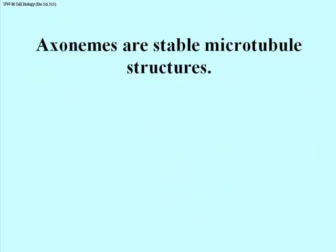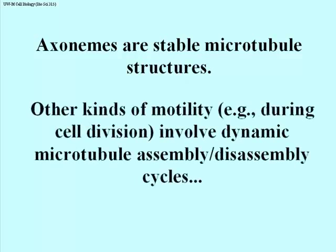Microtubules can be stable or unstable. The axoneme of a cilium or flagellum is a stable structure — during formation, the alpha-beta heterodimers build a microtubule by adding first to a protofilament and then to a microtubule, growing until they're the right length, and then they stop. For as long as the cell is active and healthy, these 9+2 arrays are stable — they don't assemble and disassemble. The sliding of these stable microtubules accounts for bending of a cilium or flagellum in a eukaryotic cell.